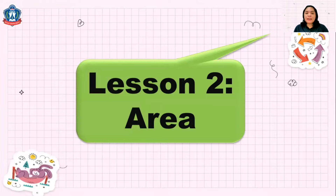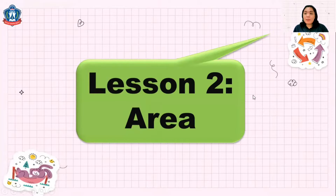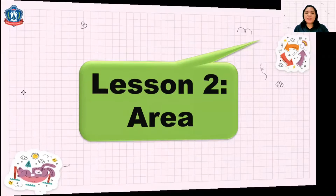Let's start with Lesson 2, it talks about area. From the previous video, you learned about perimeter. Perimeter is the total length around a figure. So in this video, we will focus about area of figures or polygons.